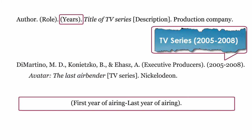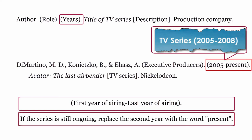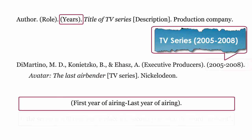Use the years of original release or airing. Start with the first year of airing, then the last year of airing. If the series is still ongoing, replace the second year with the word present. The years are written within round brackets, finished with a full stop.